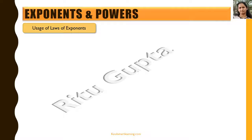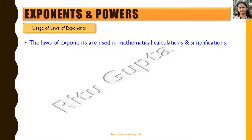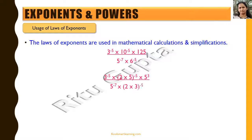The laws of exponents are used in mathematical calculations and simplifications. For example, consider the expression: 3 × 3^(−5) × 10^(−5) × 125 divided by 5^(−7) × 6^(−5). To evaluate this, we first write all numbers as a product of their prime factors. 3 is already prime. 10 is written as 2 × 5, whole raised to the power −5. Similarly, 125 is written as 5^3. In the denominator, 6^(−5) is written as (2 × 3)^(−5).